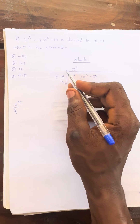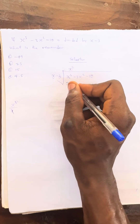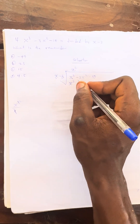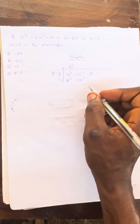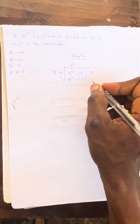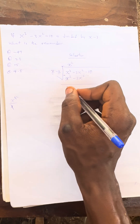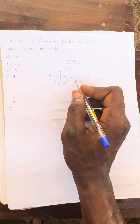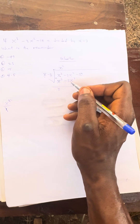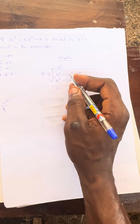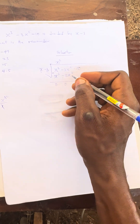So you now use this x squared to multiply these two. x squared times x will give us x cubed. x squared times minus 3 will be minus 3x squared. Then you now subtract. x cubed minus x cubed will be 0. Minus 3x squared minus (minus 3x squared) — that will be minus 3x squared plus 3x squared, which is 0 as well.